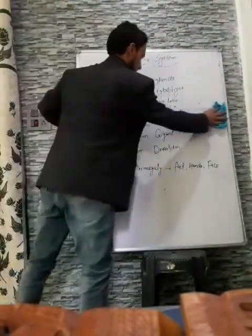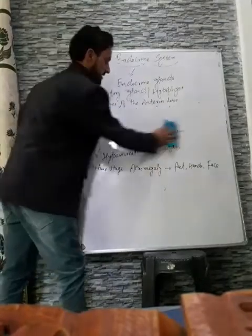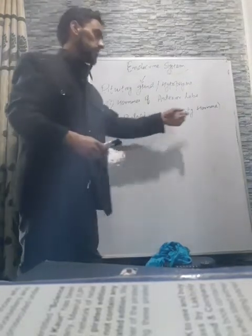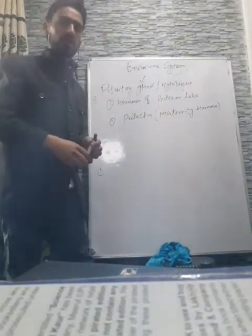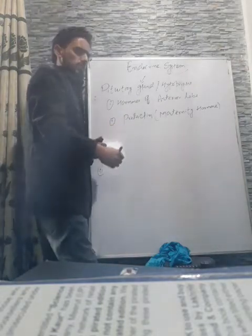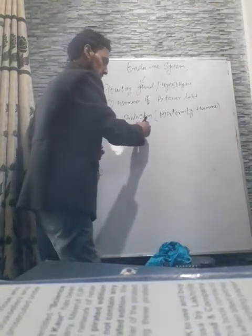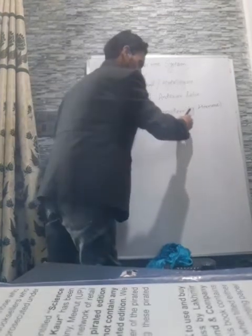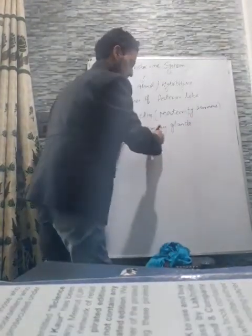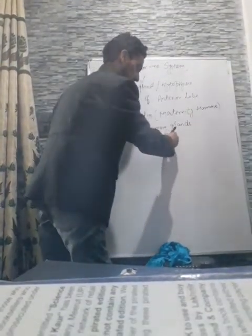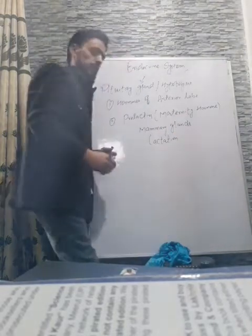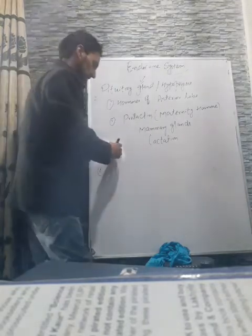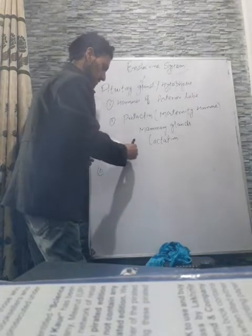The next hormone is prolactin, also known as the maternity hormone. It is secreted by the anterior lobe of the pituitary gland. Its function is to help in the growth of mammary glands during pregnancy and to assist in lactation — the production of milk from the mammary glands.